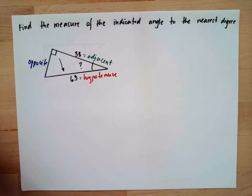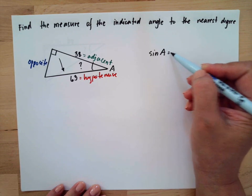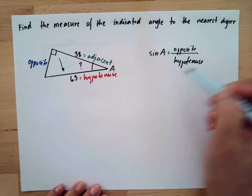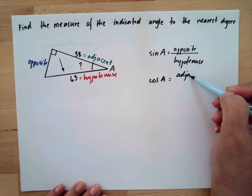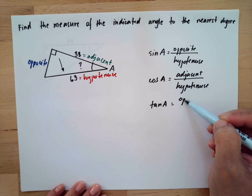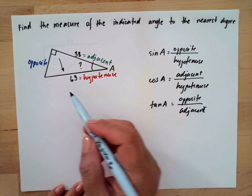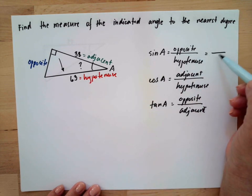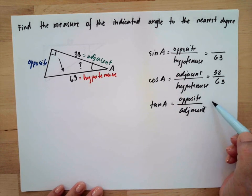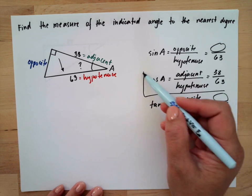We will identify which trigonometric function to use. Assuming this is angle A: sine A equals opposite over hypotenuse, cosine A equals adjacent over hypotenuse, and tangent equals opposite over adjacent. From the given, the hypotenuse is 63 and the adjacent is 38, while the opposite is unknown. So we cannot use sine or tangent — we will use cosine.